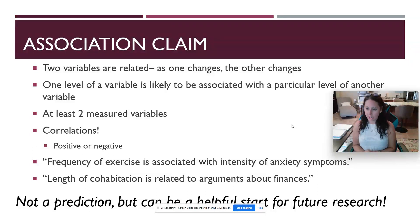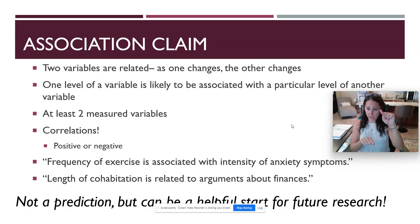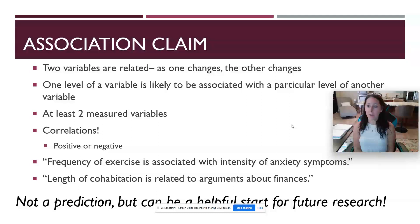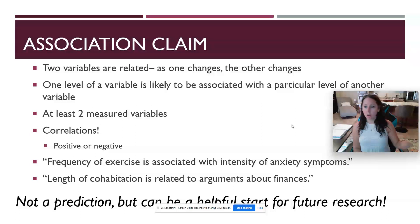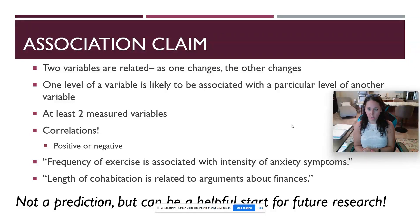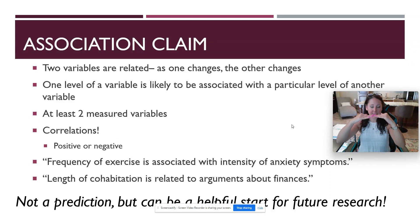A negative correlation — a negative association claim — means your two variables are moving in opposite directions: as one goes up, the other goes down; as one goes down, the other goes up. As amount of sleep decreases, stress symptoms increase. As frequency of alcohol consumption increases, grades decrease. These are moving in opposite directions — that's a negative correlation. Remember, if both variables are decreasing together, that is still a positive correlation because they're moving in the same direction.